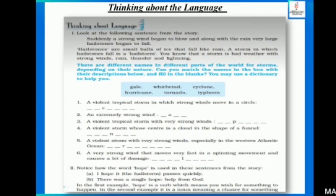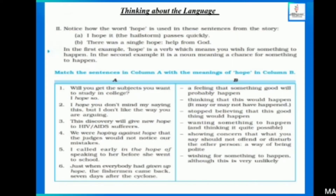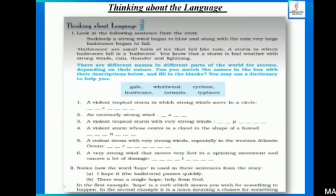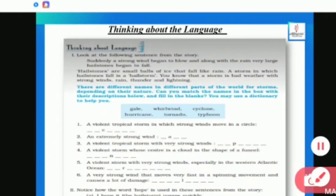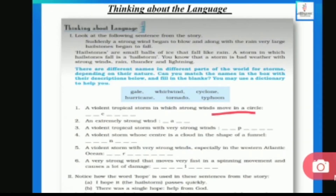Can you match the names in the box according to the description? A violent tropical storm in which strong winds move in a circle — usko cyclone bolte hain. An extremely strong wind — bhout tez hawa jab chalti hai — usko hum gale bolte hain.